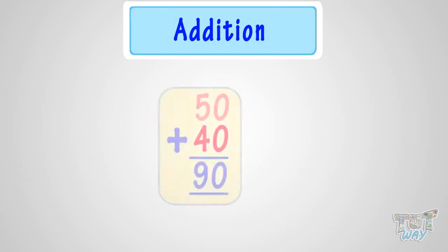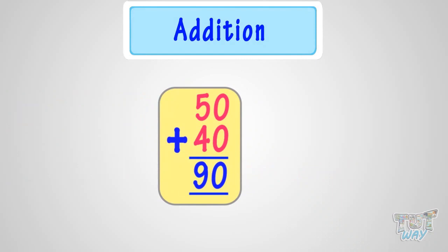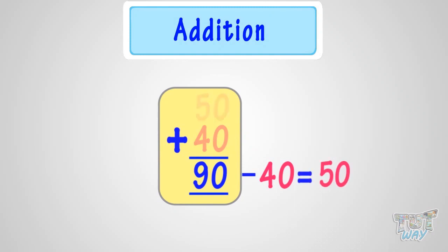So we have learned to check addition problems. We subtract one of the addends from the sum, and if we get the other addend, our sum is correct.